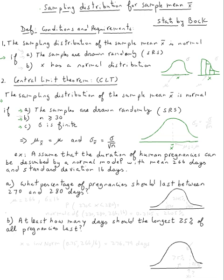Not only that, we know that the mean — this is the distribution for x̄ — so this point here will be the mean of the means. We know that's equal to the population mean mu. And the standard deviation for all the means will be equal to the population standard deviation sigma over the square root of the sample size.